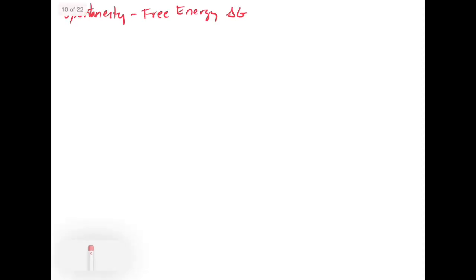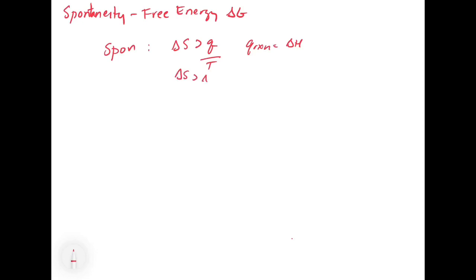We know that for a spontaneous reaction, delta S has got to be greater than Q over T. And we know that for a reaction, the Q of a reaction is equal to delta H. So we can substitute that in and say delta S has got to be greater than delta H over T. If we subtract delta S from both sides, we get zero has got to be greater than delta H over T minus delta S. And if we multiply both sides by T, we get zero has to be greater than delta H minus T delta S.